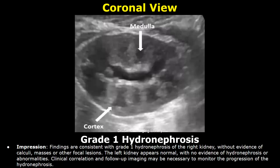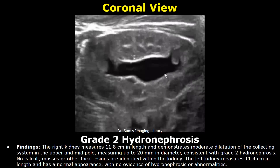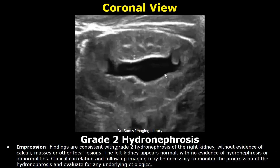In the report of a grade 2 hydronephrosis, you can write moderate dilatation of the collecting system, and you can write the regions involved. Then you can write the measurement of the collecting system — in this example, it was up to 20 mm in diameter. Here is the impression. Findings are consistent with grade 2 hydronephrosis of the right kidney, without evidence of calculi, masses, or other focal lesions. You can end the impression by writing about clinical correlation.